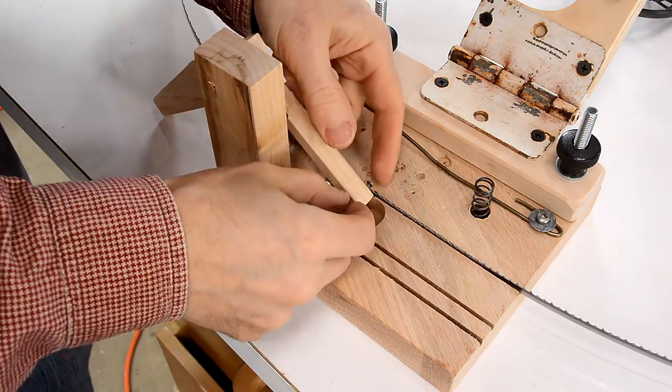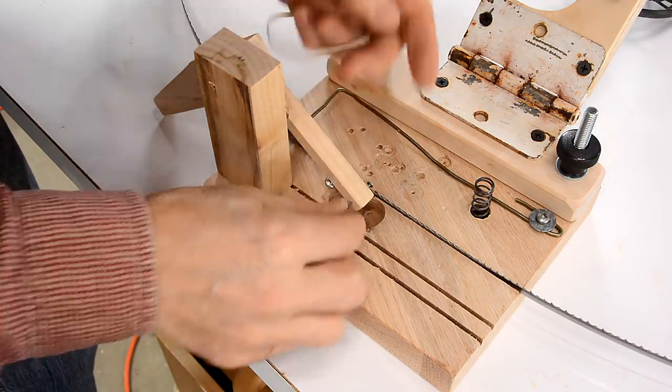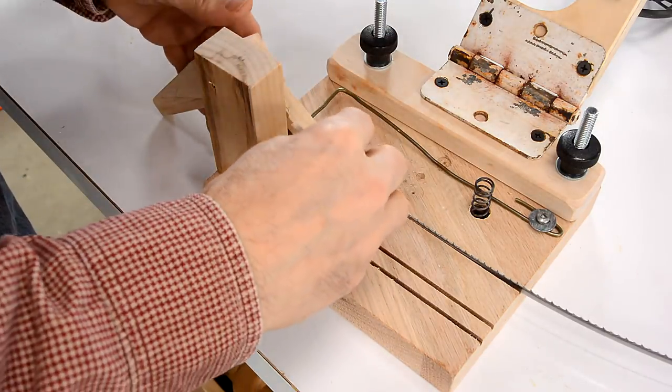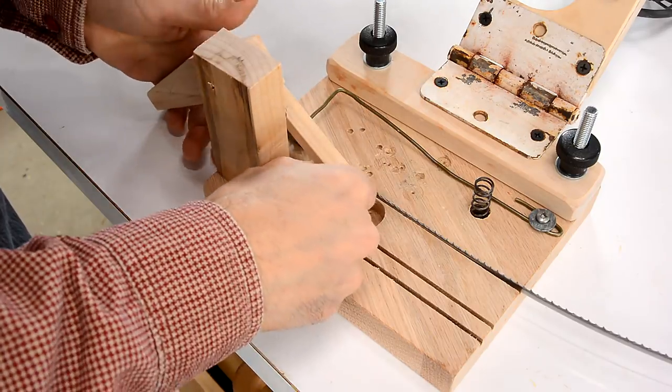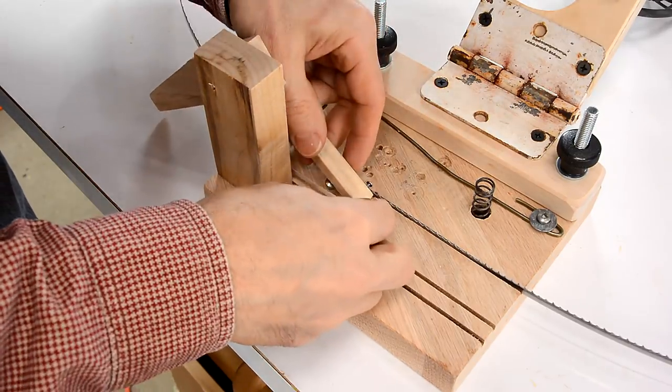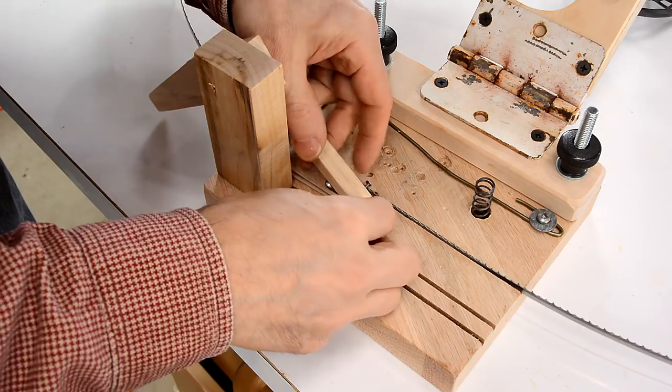Now I also found that sometimes this nail wouldn't really engage the tooth. So I'm gonna add a rubber band that hooks onto a screw back here and pulls against that nail to help push it down.